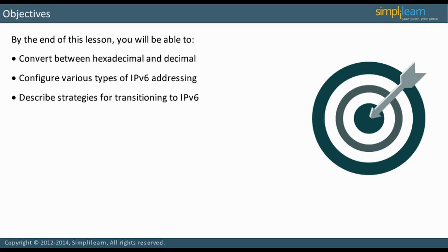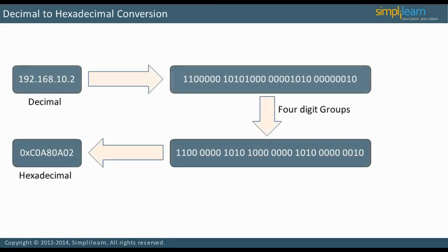In the next slide, let us understand how to convert decimal to hexadecimal. The dotted address 192.168.10.2 is represented in binary form as shown on the slide. To convert this to hexadecimal, create groups of four digits. Each of the groups is assigned a base 16 number, 1 through 9.